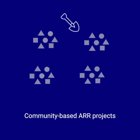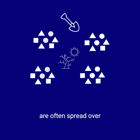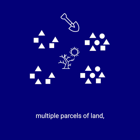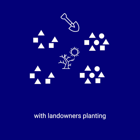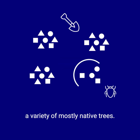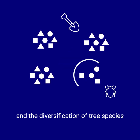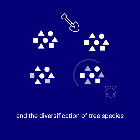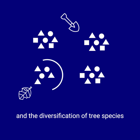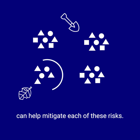Community-based ARR projects, on the other hand, are often spread over multiple parcels of land, with landowners planting a variety of mostly native trees. The distance between parcels and the diversification of tree species within those areas can help mitigate each of these risks.